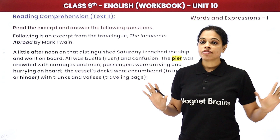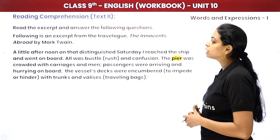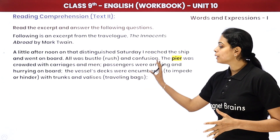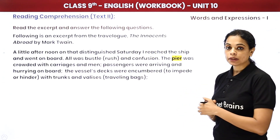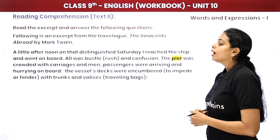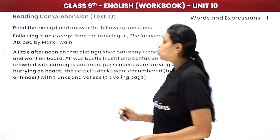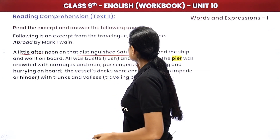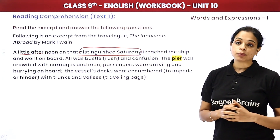We have our first reading comprehension done. The second one says: read the excerpt and answer the following questions. Difficult words have their meanings given in brackets in the workbook. The passage begins: a little afternoon on that distinguished Saturday — referring to a particular Saturday — I reached the ship and went on board.